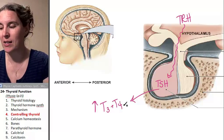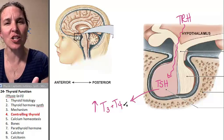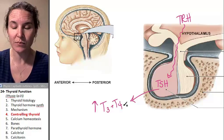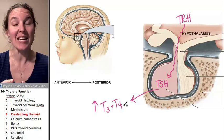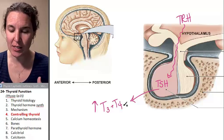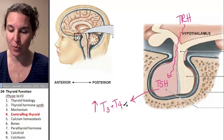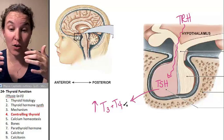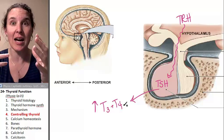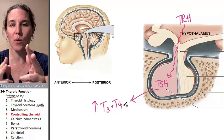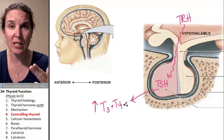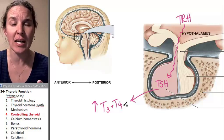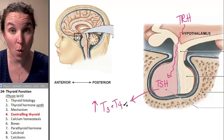Now, the question is, how does TSH actually increase thyroid hormone production? Here's a list. Number one: it increases the chopping rate of thyroglobulin. Remember, thyroglobulin had all those iodines on it and we were making it into T3 and T4. We increase the choppage — increase the number of enzymes that cut it up — and that will make more hormone.